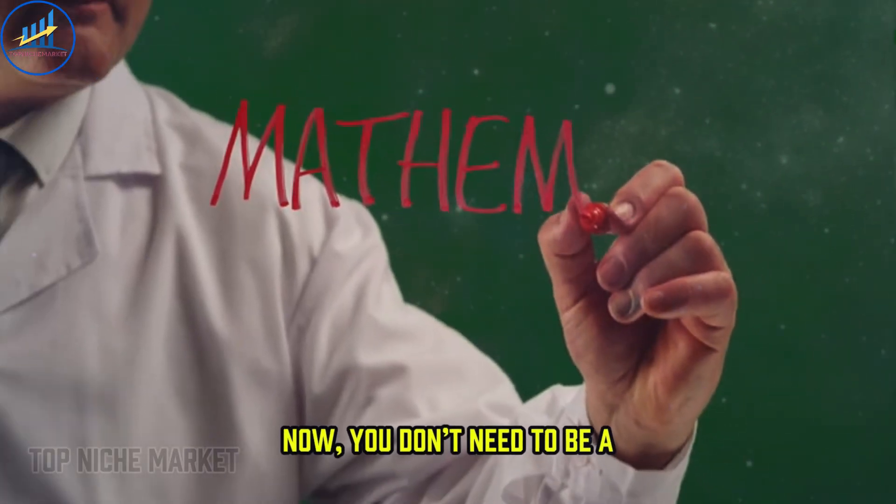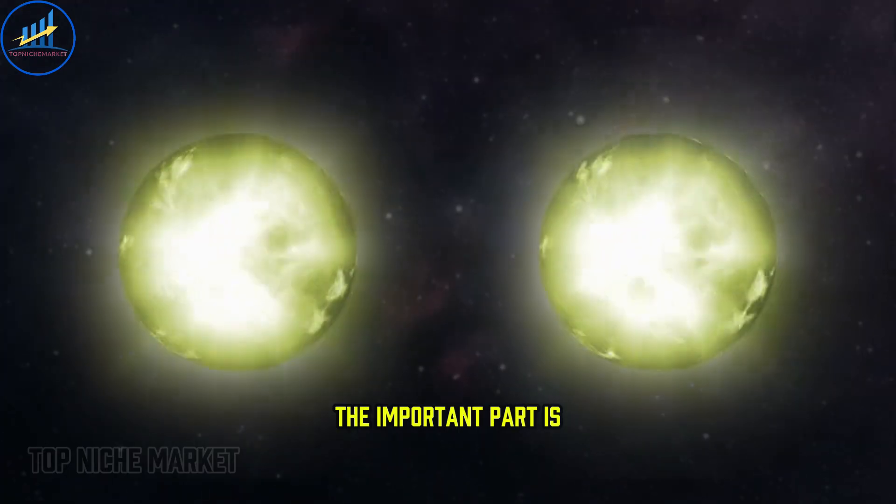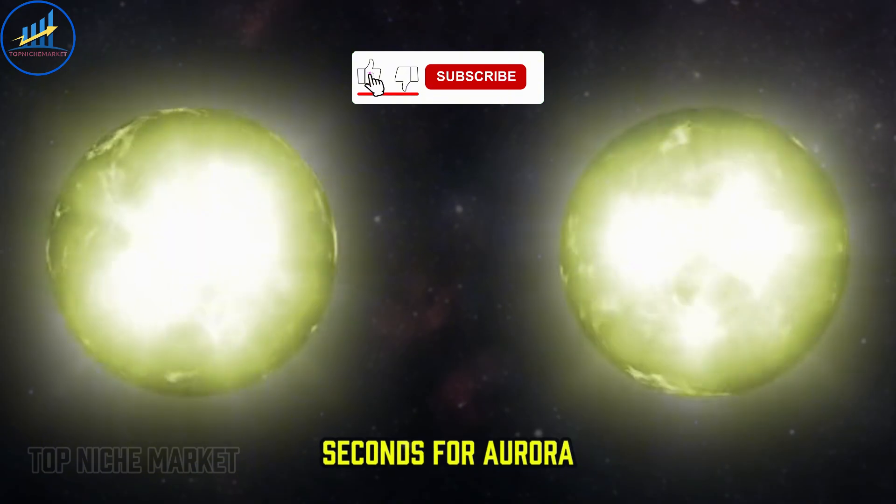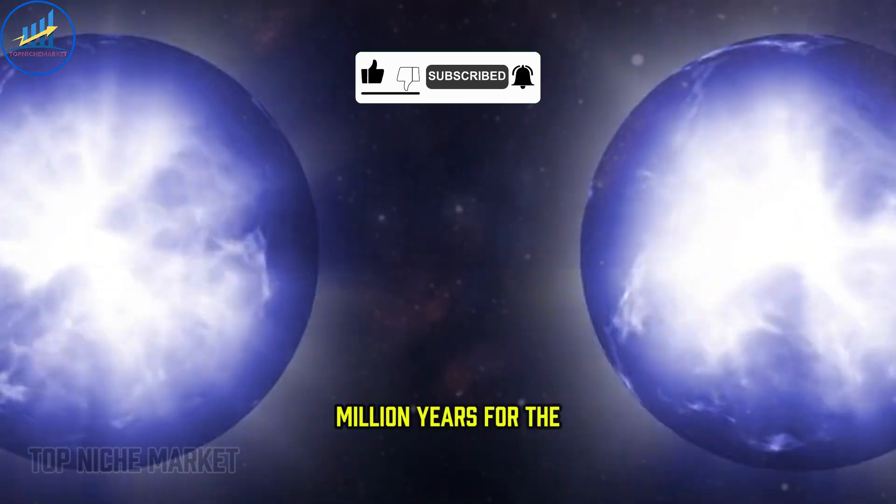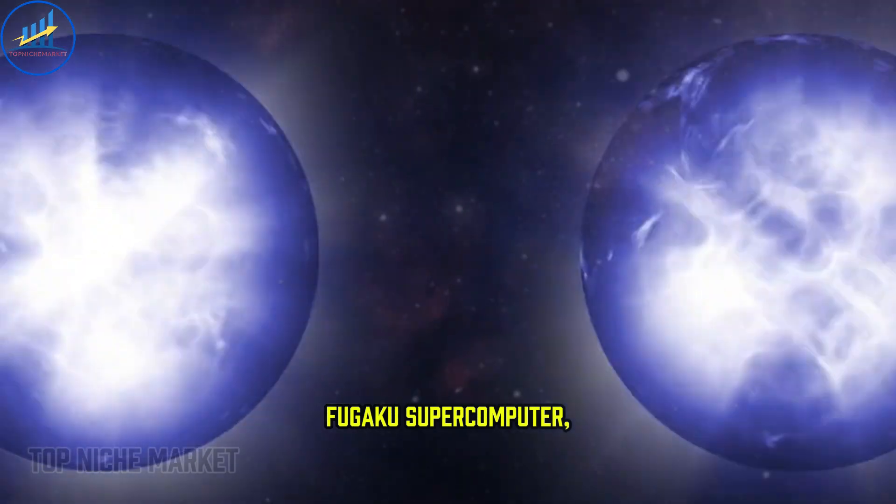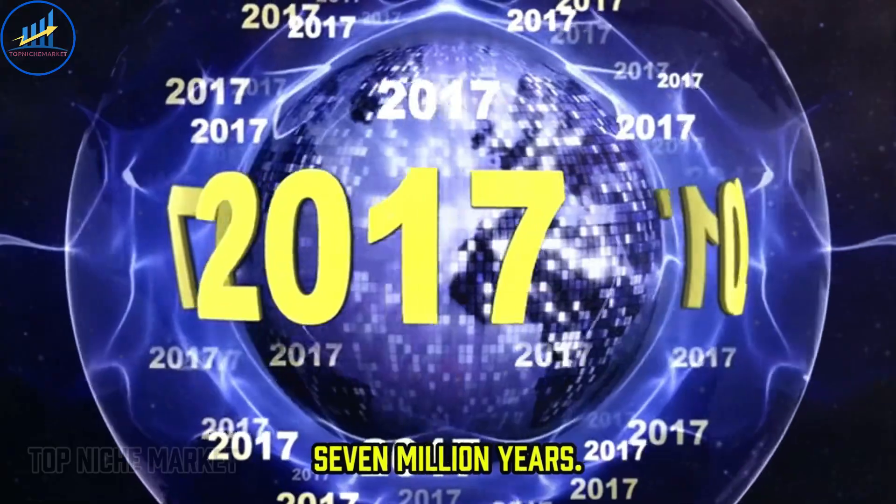Now you don't need to be a mathematician to understand the implications. The important part is the time difference: 108 seconds for Aurora versus an estimated 7 million years for the Fugaku supercomputer, the reigning champion of classical machines. 7 million years.